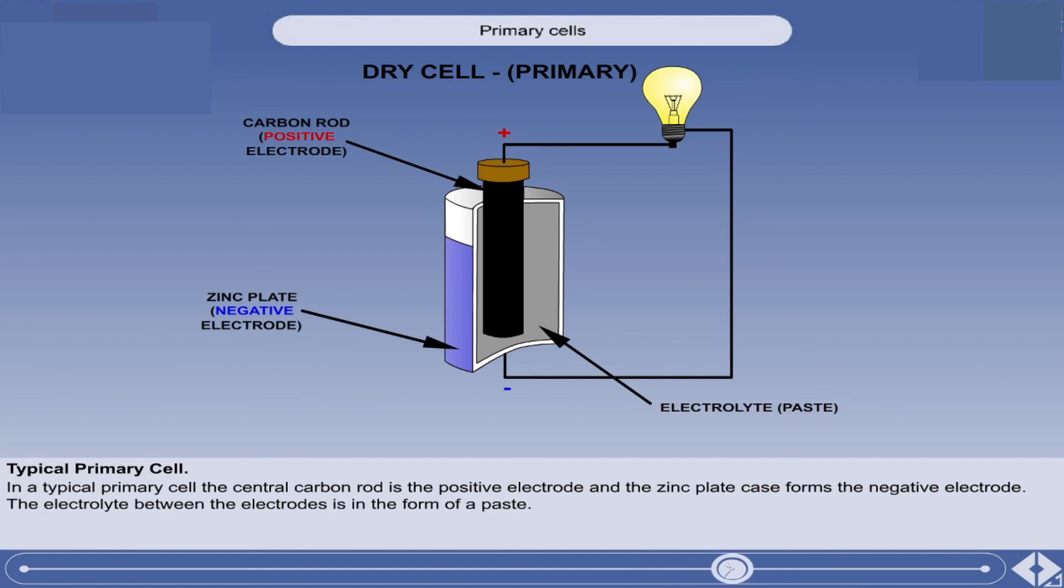The electrolyte between the electrodes is in the form of a paste, so batteries of this type are often referred to as dry cells.